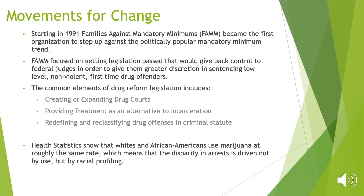In 1991, the pendulum swung back a little bit, starting with Families Against Mandatory Minimums — the first organization to step up against politically popular mandatory minimum trends. FAMM focused on getting legislation passed that would give back control to federal judges, giving them greater discretion in sentencing low-level, non-violent, first-time drug offenders. The common elements of drug reform legislation included creating or expanding drug courts, providing treatment as an alternative to incarceration, and redefining and reclassifying drug offenses in criminal statute.